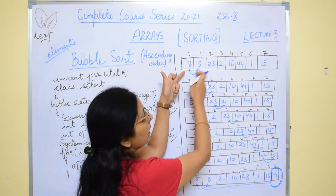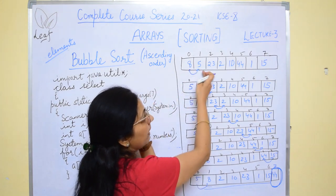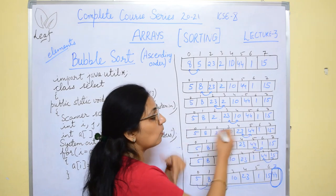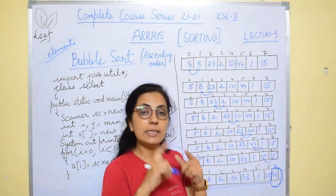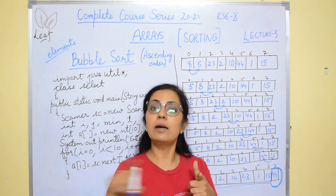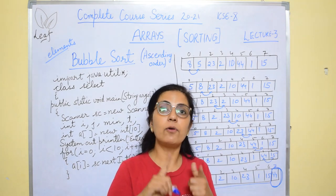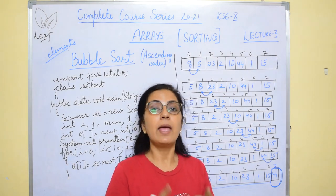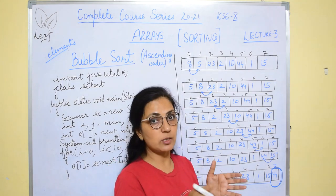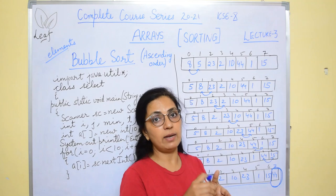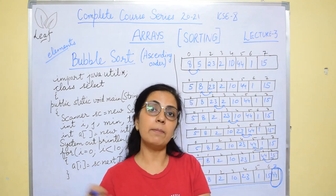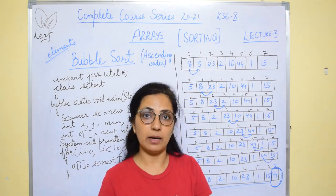So this is the logic for bubble sorting: the checking is done adjacent to adjacent — next to next elements are checked, and the swapping takes place at that time only. In selection sorting, the entire list is checked for a specific item and then swapping takes place. But here in bubble sort, the swapping takes place right away whenever you find the smaller number — you swap the numbers immediately.